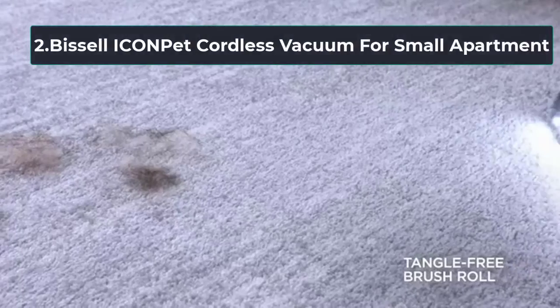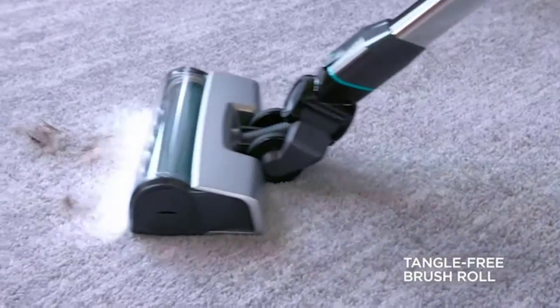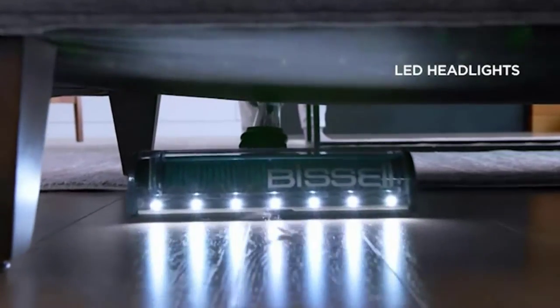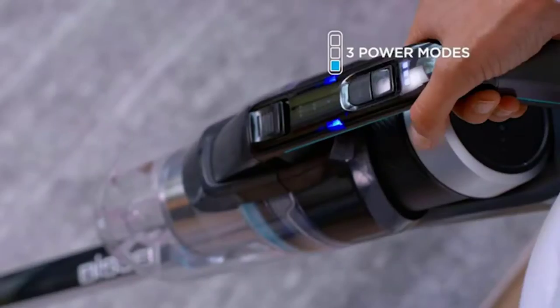At number two: Bissell Icon Pet Cordless Vacuum for small apartment. You raise some pets and you are afraid of pet hair that can negatively impact your family's health. The best choice is to own a vacuum. This Bissell Icon Pet Cordless Vacuum is produced for you.